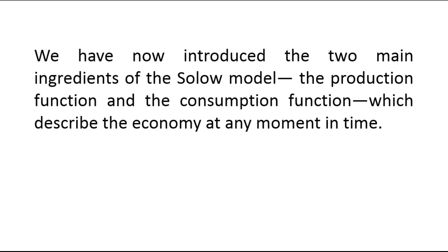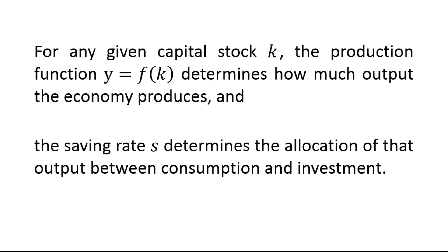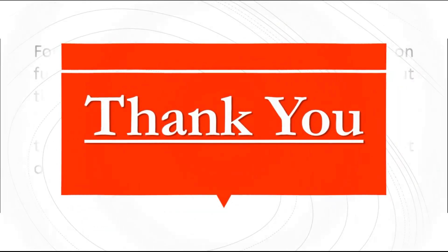We have now introduced the two main ingredients of the Solow model: the production function and the consumption function, which describe the economy at any moment in time. For any given capital stock k, the production function y equals f(k) determines how much output the economy produces, and the saving rate s determines the allocation of that output between consumption and investment.